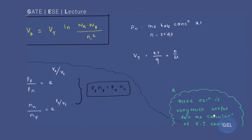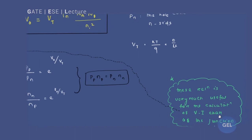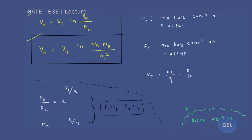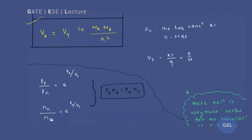Now, forget about derivations for the moment. These relationships are very useful for the calculation of V-I characteristics of the junction, which we'll see in the later case. Now look here carefully: pp/pn is nothing but e to the power V₀/Vt. And your nn/np — where nn is the electron concentration at the N side and np is the electron concentration at the P side — their ratio will also equal e to the power V₀/Vt.